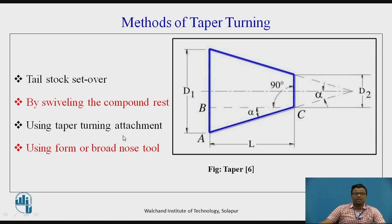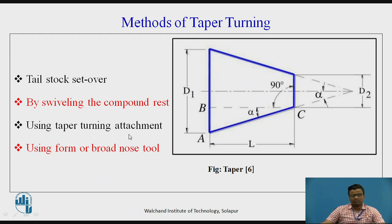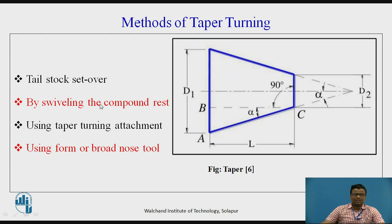There are different methods of taper turning. The first is the tailstock set-over method. Others include swiveling the compound rest, using a taper turning attachment, and using a form tool or broad nose tool. In this first session, we will cover the tailstock set-over method and the form/broad nose tool method.